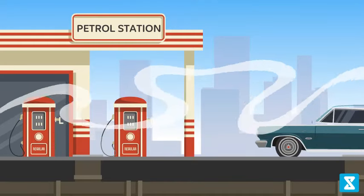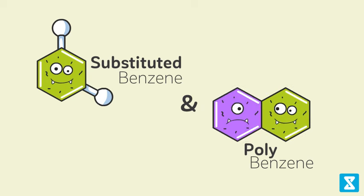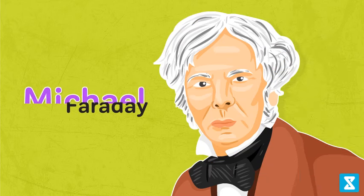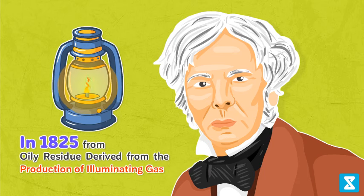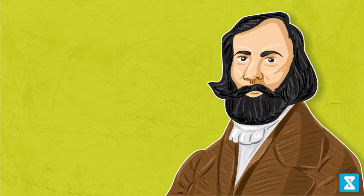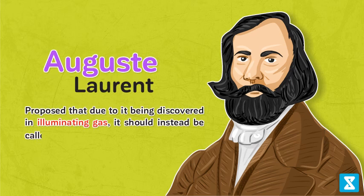Substituted benzene and polybenzenes are known as arenes. Benzene was first isolated by the English scientist Michael Faraday in 1825 from the oily residue derived from the production of illuminating gas. In 1836, the French chemist Auguste Laurent proposed that due to it being discovered in illuminating gas, it should instead be called phene.